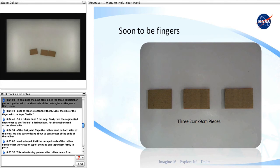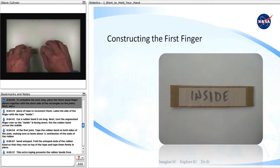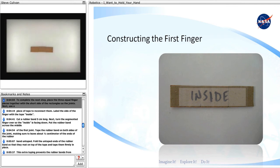To complete the next step, place the three equal finger pieces together with the short side of the rectangles as the joints. Next, use a piece of tape to reconnect them.